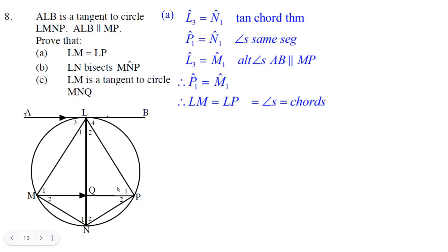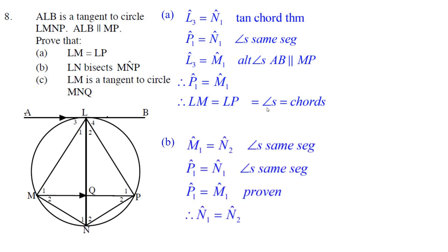it's sides opposite equal angles. But also, because the angles are equal, it means that the chords LM and LP have to be equal. Equal angles make equal chords. Let's try the next question.